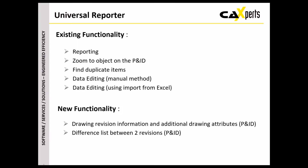We are going to cover the following topics. First, I'm going to speak about existing functionality, like the generic function which allows you to create reports. Then, I'm going to talk about the possibilities to find objects on the PID. The next chapter will be about finding duplicate items, like duplicate valves or duplicate pipe runs which have the same tag.